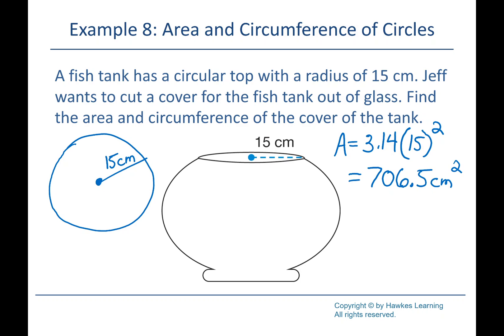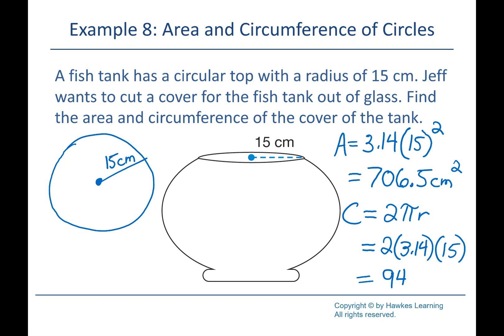For circumference, since we're given the radius, I'll use the two-pi-r version: 2 times 3.14 times 15, which gives me 94.2. Circumference, like perimeter, is just in base units — so it's just centimeters.